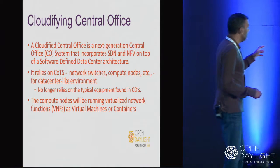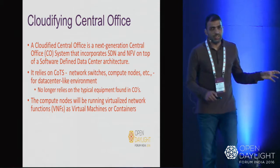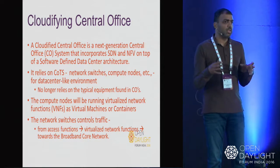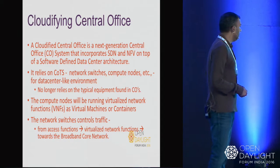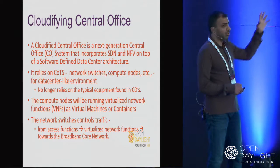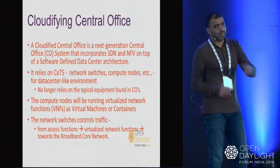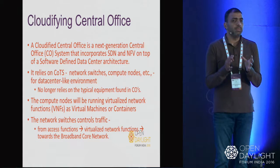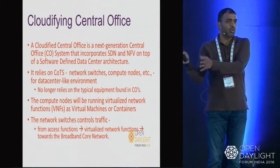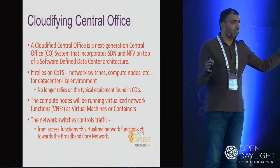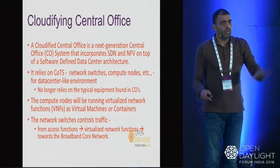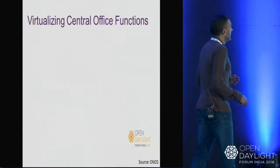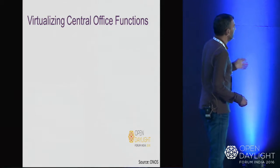It's called the next-generation central office — it incorporates SDN and NFV on top of a software-defined architecture. The compute nodes will run all VNFs as virtual machines or containers, and we'll have network switches in these fabric architectures moving traffic from access functions through the VNFs to the core network. This whole solution acts in between the access functions and the core network.